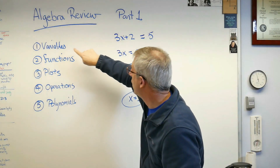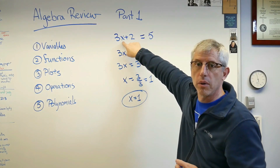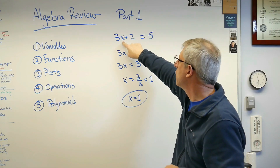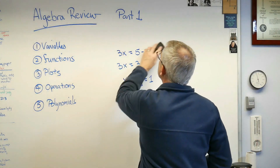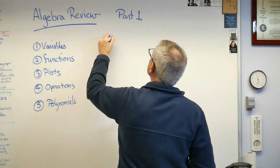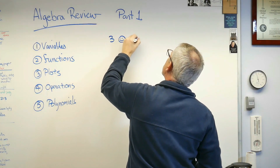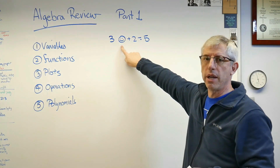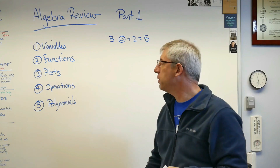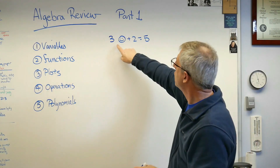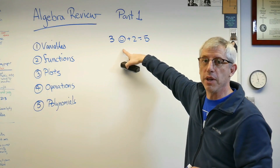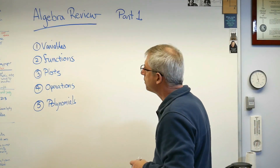Solving an algebraic equation means finding the value for the variable. A variable like x is a number we don't know yet, so we put something in its place to stand for it. We tend to use letters for variable names — x, Greek letters, Latin letters, some forms of math even use Hebrew letters. You could use a smiley face; it doesn't matter. It's just something to represent the number you don't know yet.